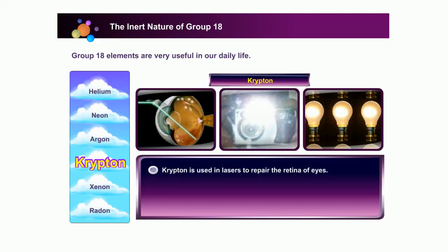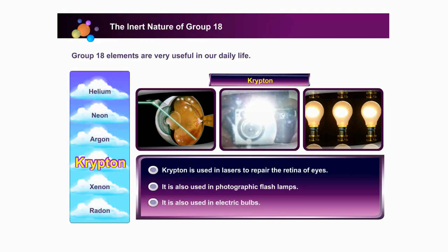Krypton is used in lasers to repair the retina of eyes. It is also used in photographic flash lamps and in electric bulbs.